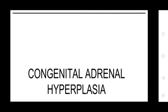Congenital adrenal hyperplasia (CAH) is a group of inherited disorders marked by congenital deficiency or absence of one or more enzymes essential for the production of adrenal cortical hormones. It is an inherited autosomal recessive disorder. The enzymes involved most commonly are 21-hydroxylase (92–95%), deficiency of 11-beta-hydroxylase (5–8%), and 3-beta-hydroxysteroid dehydrogenase, which also lead to CAH.